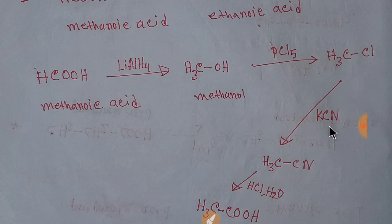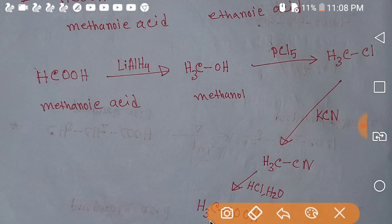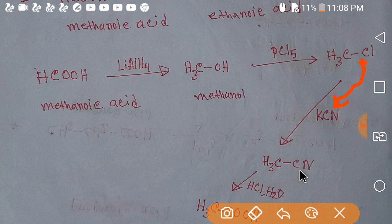Now we will add potassium cyanide. This chlorine will be replaced by a cyanide group. The cyanide ion replaces Cl and we will get ethanenitrile.